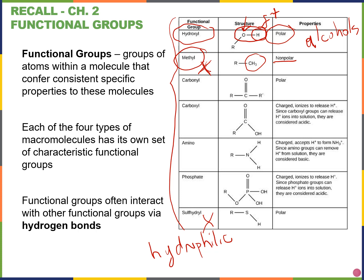Our next functional groups are carbonyl groups. These are polar, water loving. If we see carbonyls with two carbons on either side of that central carbon, these are called ketoses. And then if one of those carbons is instead a hydrogen atom, which we'll see later on for the carbohydrates, we call them aldoses.